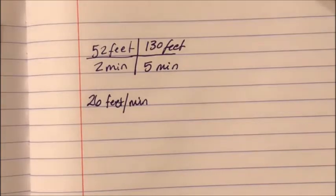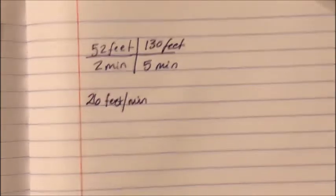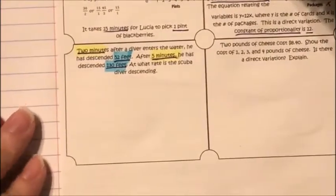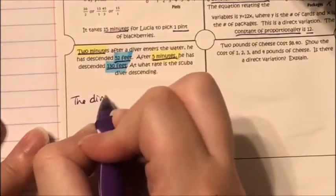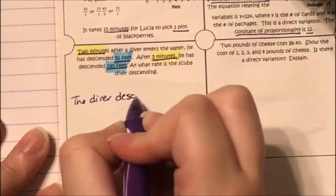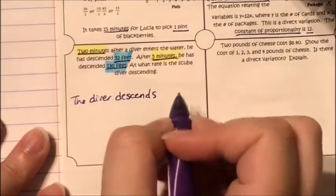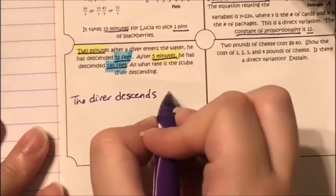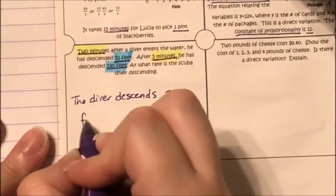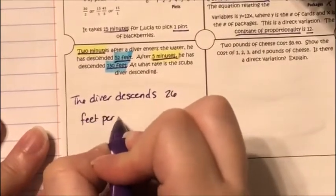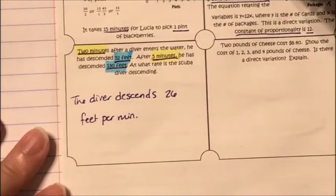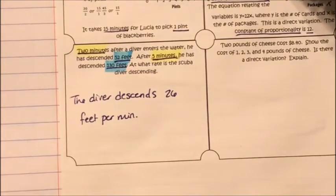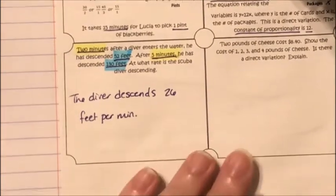This tells me the diver descends — descends means to go down — 26 feet per minute. So every minute the diver goes down 26 feet.